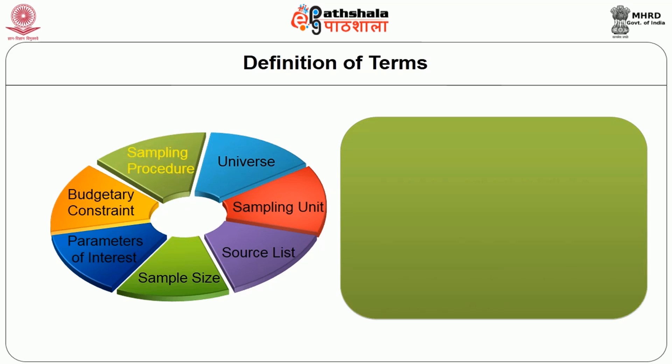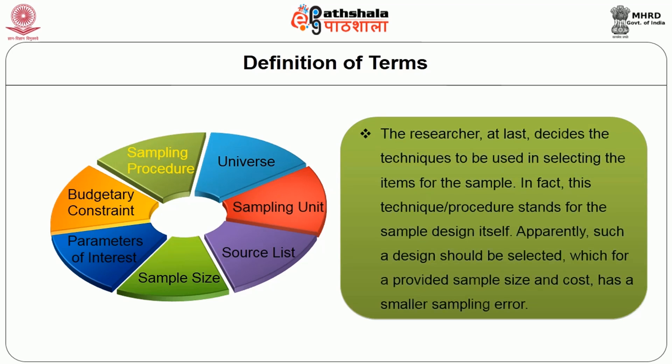Sampling procedure: the researcher decides the techniques to be used in selecting the items for the sample. This technique or procedure stands for the sample design itself. Such a design should be selected which, for a given sample size and cost, has a smaller sampling error.